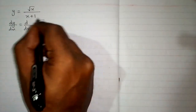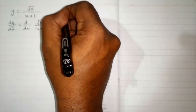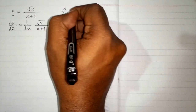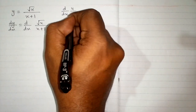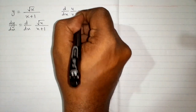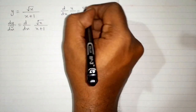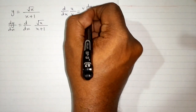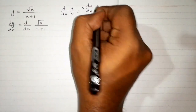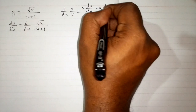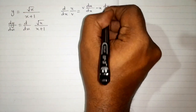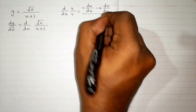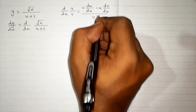Here we have a fraction, so we will apply the quotient rule of differentiation, which is: the derivative of u upon v is equal to v times derivative of u minus u times derivative of v upon v square.